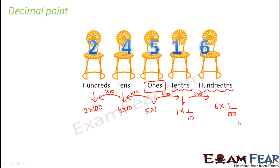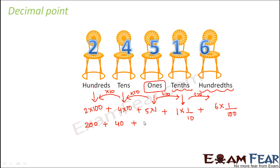So in this fashion, you are getting a quite different number. Now many people might say that if we have 5 digits, we would call it 2 into 10,000 plus 4 into 1,000 plus 5 into 100 plus 1 into 10 plus 6 into 1. But that is not the case because 6 is not at the 1's place — we are saying that 5 is at the 1's place. So to find the value of this number, we add all of these together, and we get 200 plus 40 plus 5 plus 1/10 plus 6/100.